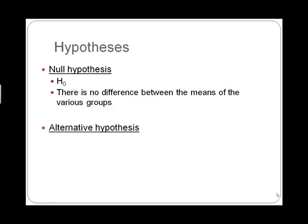A null hypothesis means that we suspect there is no difference between the means of the various groups. So our null hypothesis is what we hope not to find. We hope that there usually is a difference between our means or our groups, and we expect there to be an impact of the independent variable. But the null hypothesis assumes there is no difference, so of course we want to prove this wrong.